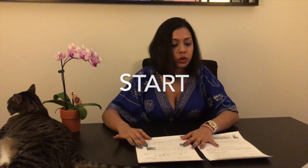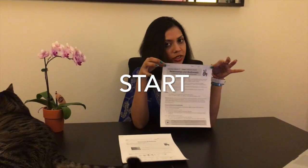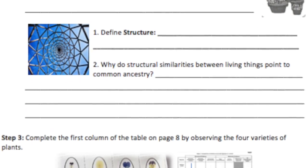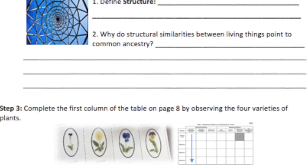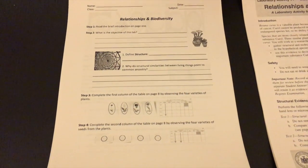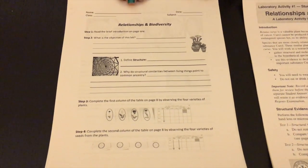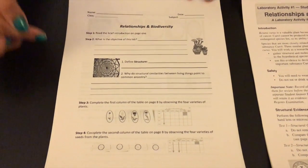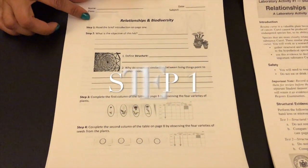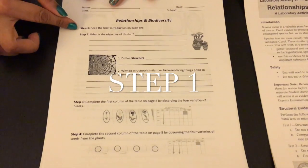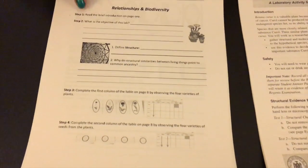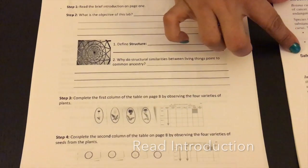To start, you will need the Relationships and Biodiversity Lab and the guided student notes. The guided student notes break the steps down in the sequence that students should complete the lab, and they also list the page on which they have to input data. Step one starts with the first page and asks students to read the brief introduction.